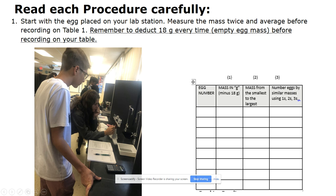Step 1 is to start with the egg placed on your lab station. Measure the mass twice and average before recording in your table. Also, I would like to note that these numbers should be changed to match the columns that they are in in table 1. Remember to deduct 18 grams, which is the mass of the empty egg, before recording the number on your table in column 2.